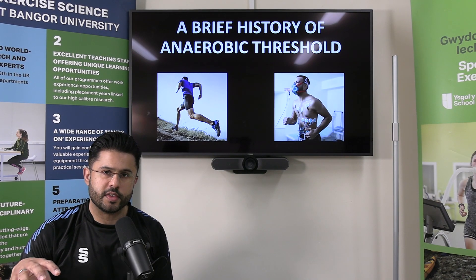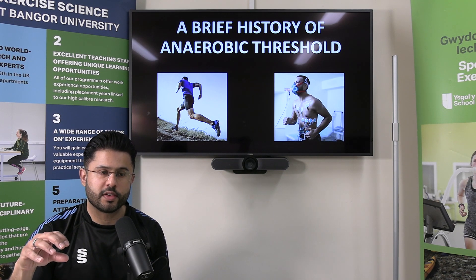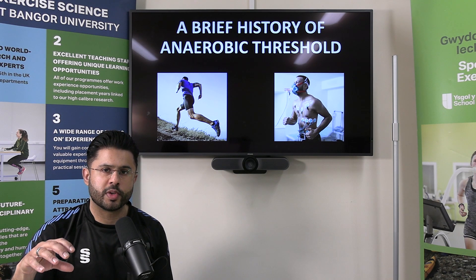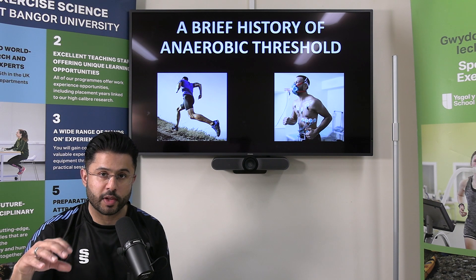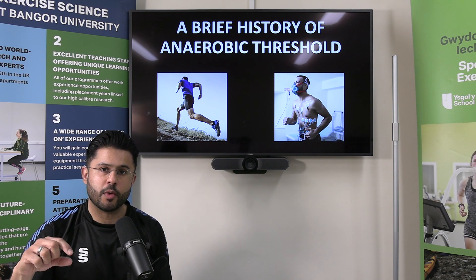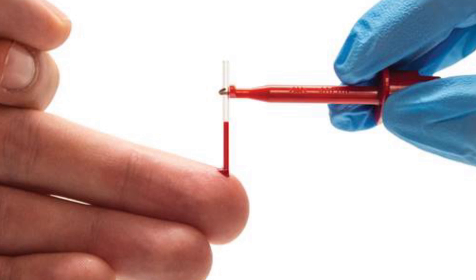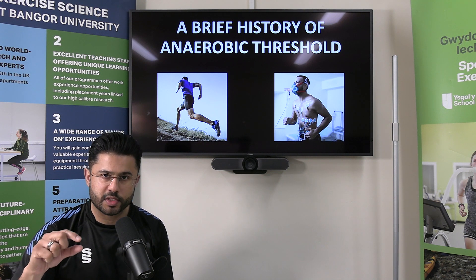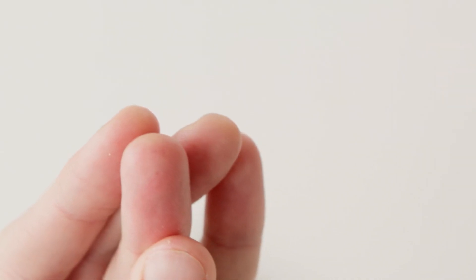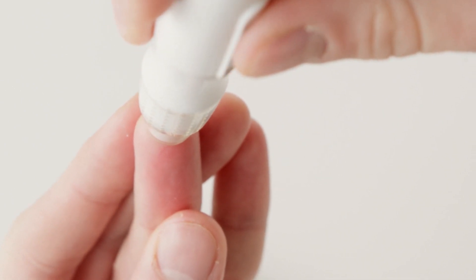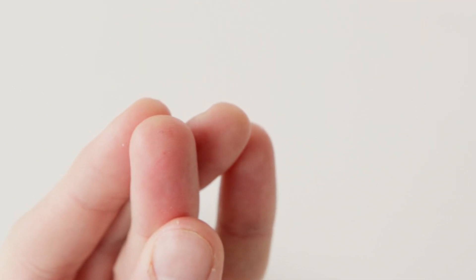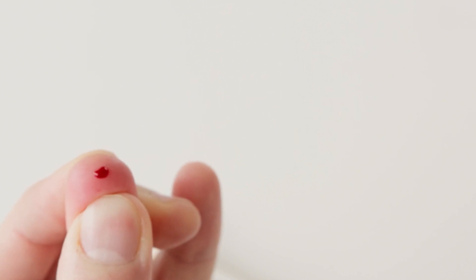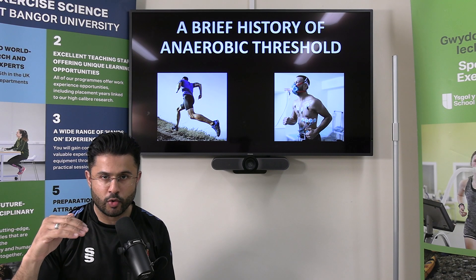So in the early 1960s, it was ventilatory data that was being used to predict or determine anaerobic threshold. But later in the 1960s, we had the advent of capillary blood lactate, and that changed everything because it meant we could actually collect blood samples very easily and look at lactate levels. This is where the lactate threshold came in, which in a way reflects similarly the processes occurring at the anaerobic threshold.